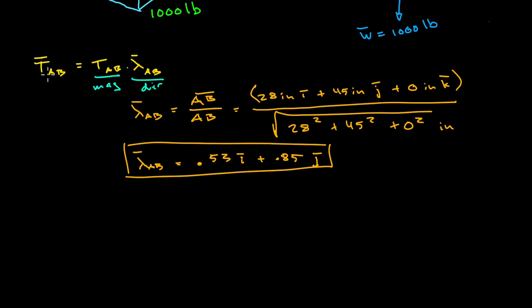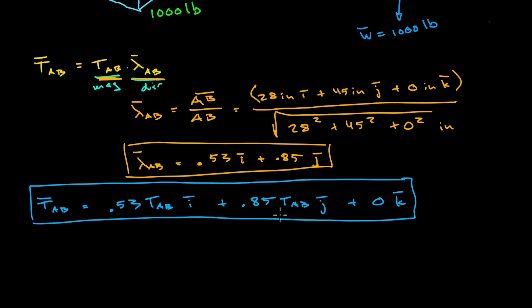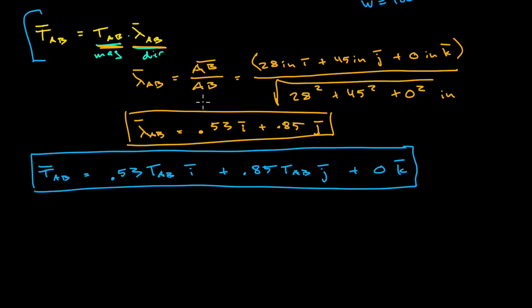Remember that the force vector — the tension in AB — is described by the magnitude multiplied by the unit vector. So at this point we can write our T sub AB vector in terms of the unknown magnitude TAB. We're still not able to solve the problem yet, but we're going to do a similar exercise for the other three force vectors in this free body diagram. Once we have that system of equations we should be able to solve for all the magnitudes of the tensions in all of the cables. We can do the same thing again for TAC and TAD and even the weight vector.